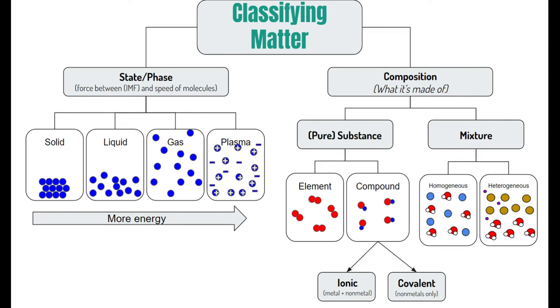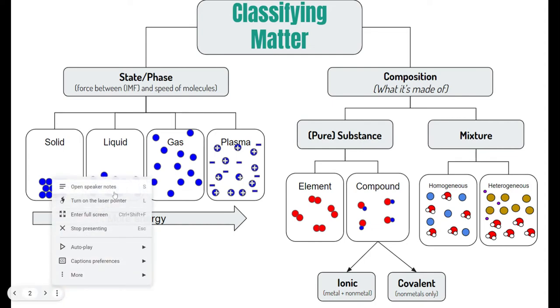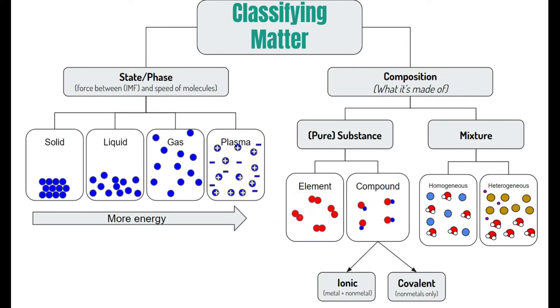If I showed you a picture of something in real life, whether it be like a rock or a bag of Skittles or something like that, you should be able to look at the composition and classify it as either a pure substance or a mixture. It's a pure substance if it's made of one type of thing, either purely an element or purely a compound. Elements are made of just one type of atom. Compounds are made of two or more different types of atoms, but they're stuck together, which make it one new thing.